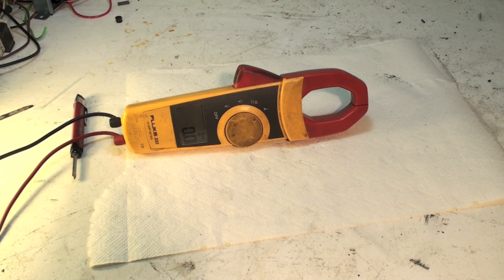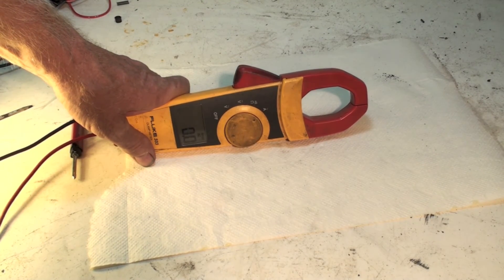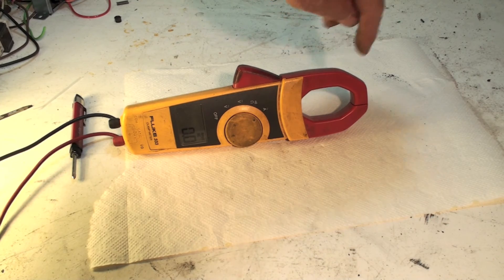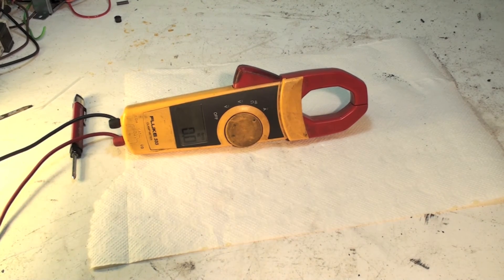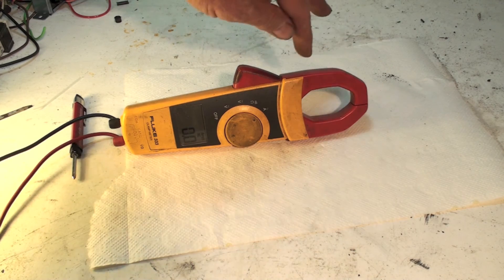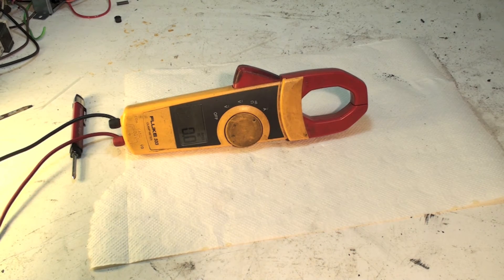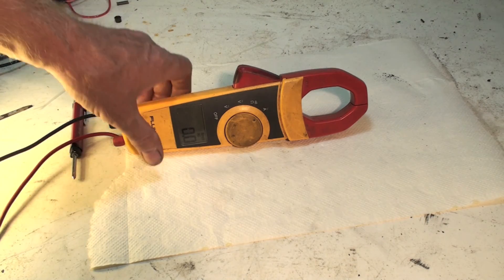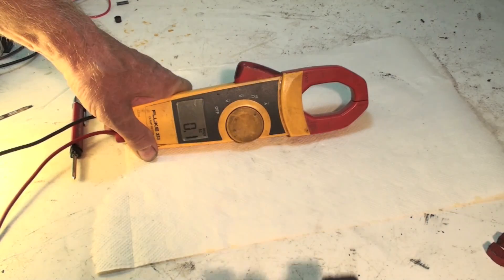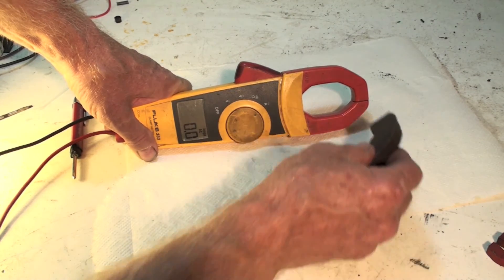Now here we're going to use an AC clamp meter to demonstrate this same thing. When I pass a wire through here with AC amperage going through it, it induces power into the clamp. And we're going to do that with a permanent magnet. I'm going to use a little bit bigger magnet on this one because it's a little more powerful.